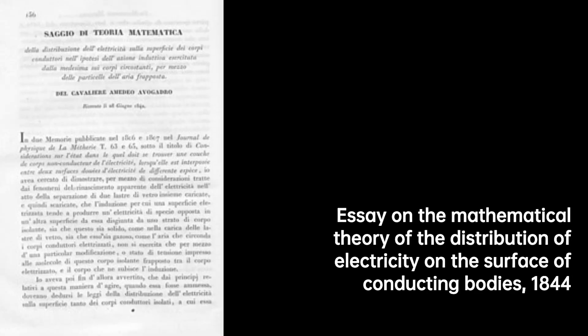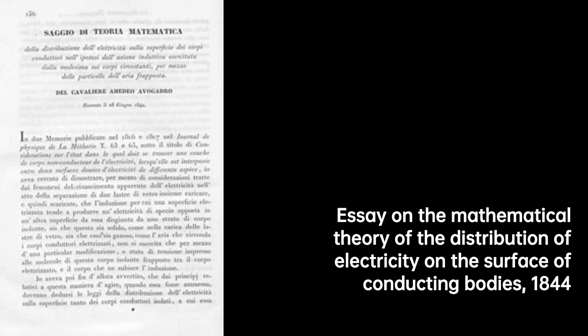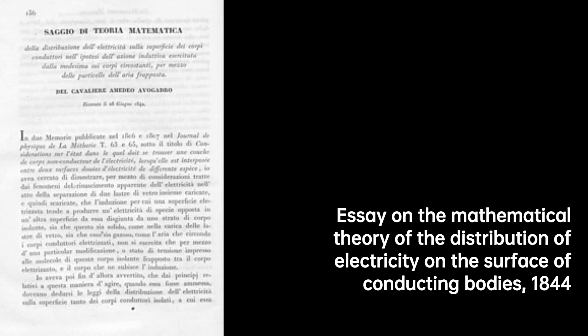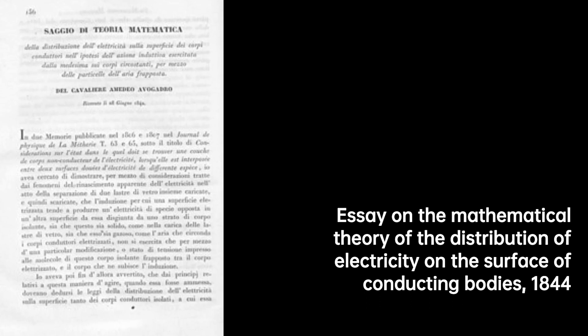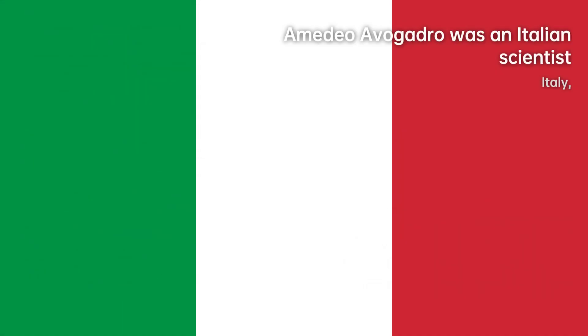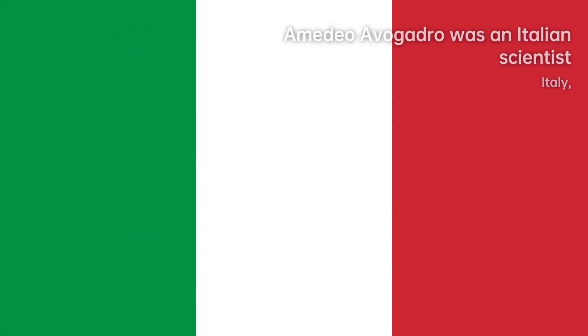Avogadro, known for his groundbreaking contributions to molecular theory, is honored by having the number of molecules per mole named after him: the Avogadro constant (NA). This constant, precisely 6.02214076 × 10²³ mol⁻¹, plays a crucial role in calculating the outcomes of chemical reactions with remarkable accuracy.